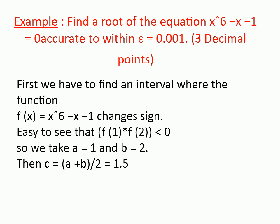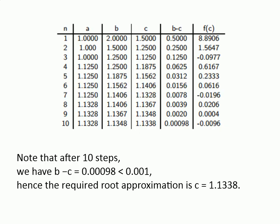We proceed further and iterate using a table with columns: n (iteration number), a (first initial guess), b (second initial guess), c = (a + b) / 2, b − c (the check condition for error), and f(c) (which decides whether a or b is replaced by c). After the 10th iteration, b − c equals 0.00098, which is less than 0.001. Hence the required root approximation is c = 1.338.